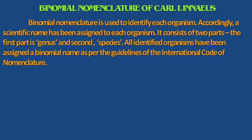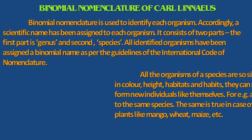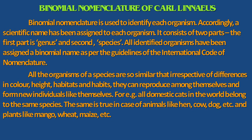All the organisms of a species are so similar that irrespective of differences in color, height, habitats, and habits, they can reproduce among themselves and form new individuals like themselves. For example, all domestic cats in the world belong to the same species. The same is true for animals like hen, cow, and dog, and plants like mango, wheat, and maize.